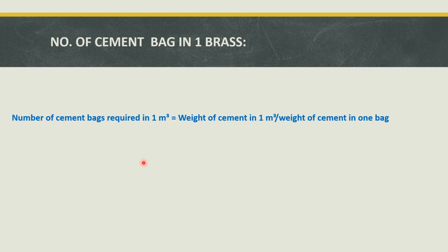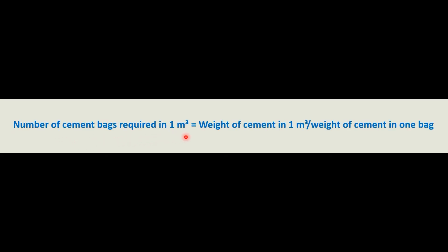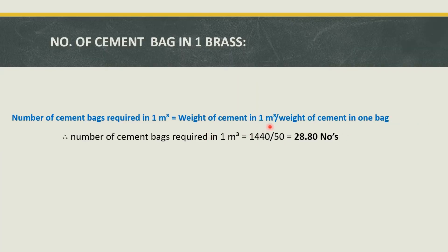Then we will find out for one brass. Number of cement bags required in one cubic meter equals weight of cement in one cubic meter divided by weight of cement in one bag. Weight of cement in one cubic meter is nothing but the density of cement, which is equal to 1440 kg per cubic meter. And weight of one cement bag is 50 kg. Therefore, number of cement bags required in one cubic meter equals 1440 divided by 50, which is equal to 28.80. So we need 28.80 number of cement bags in one cubic meter.